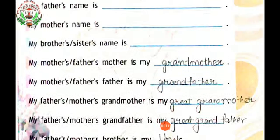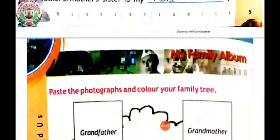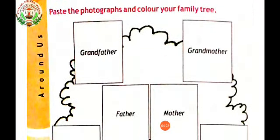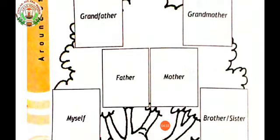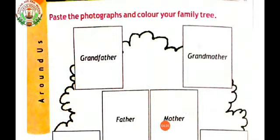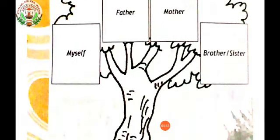Children, I hope this is clear to you all. Now come to the next page: paste the photograph and color your family tree. As you can see here, this is a picture of a family tree. You have to paste the picture of your grandfather, grandmother, father, mother, yourself, and your brother or sister, and color it beautifully. Okay, this will be your GK activity.